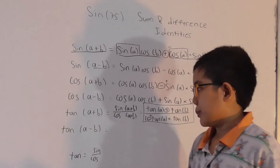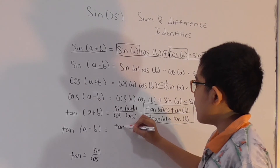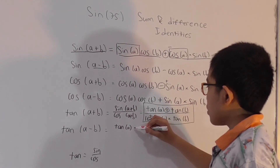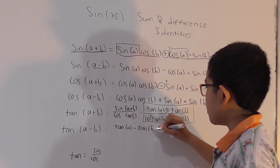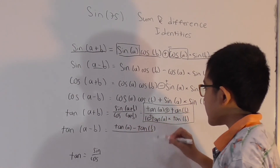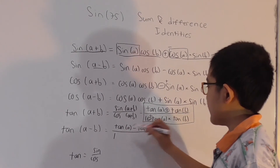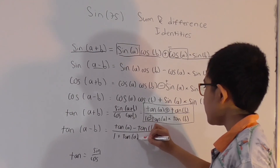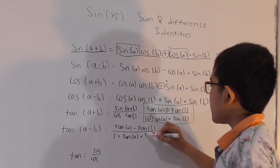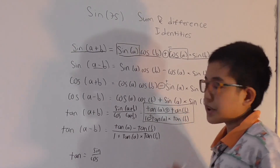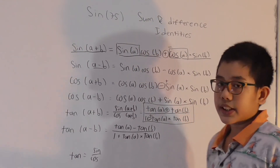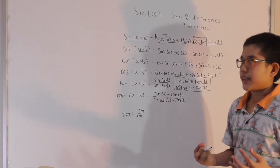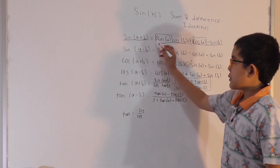For tangent of (A-B), we switch the positive to negative and the negative to positive. So it becomes: tangent A minus tangent B, divided by one plus tangent A times tangent B. The multiplication does not change to division.